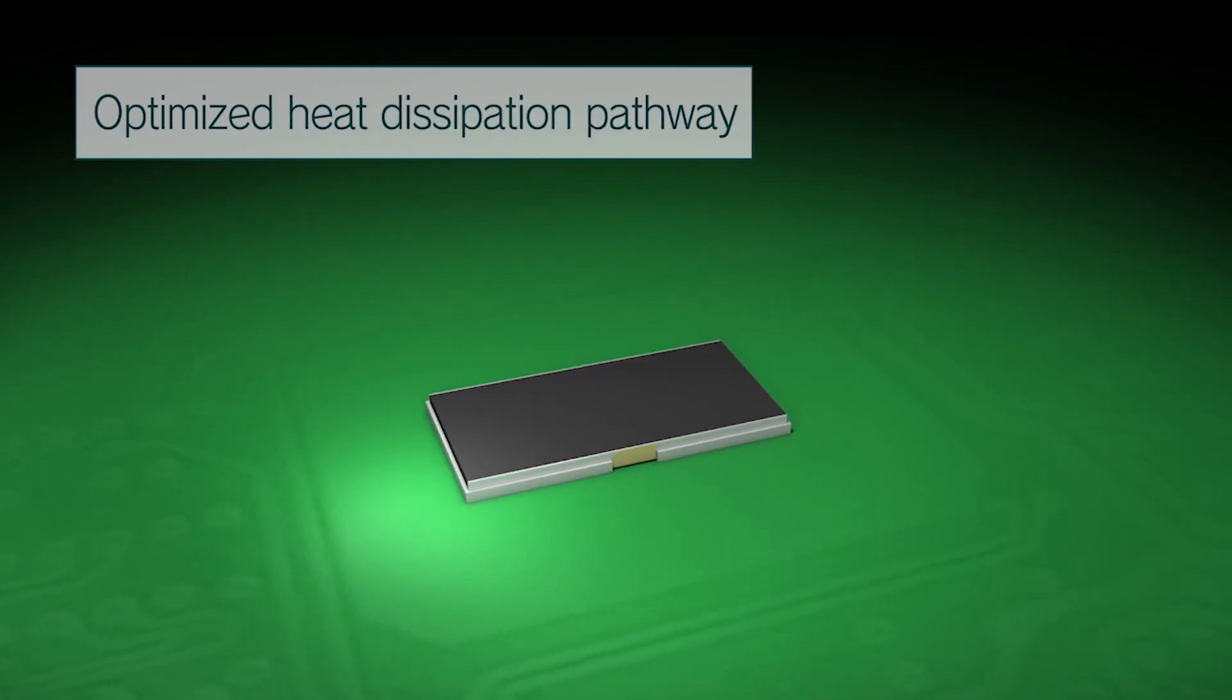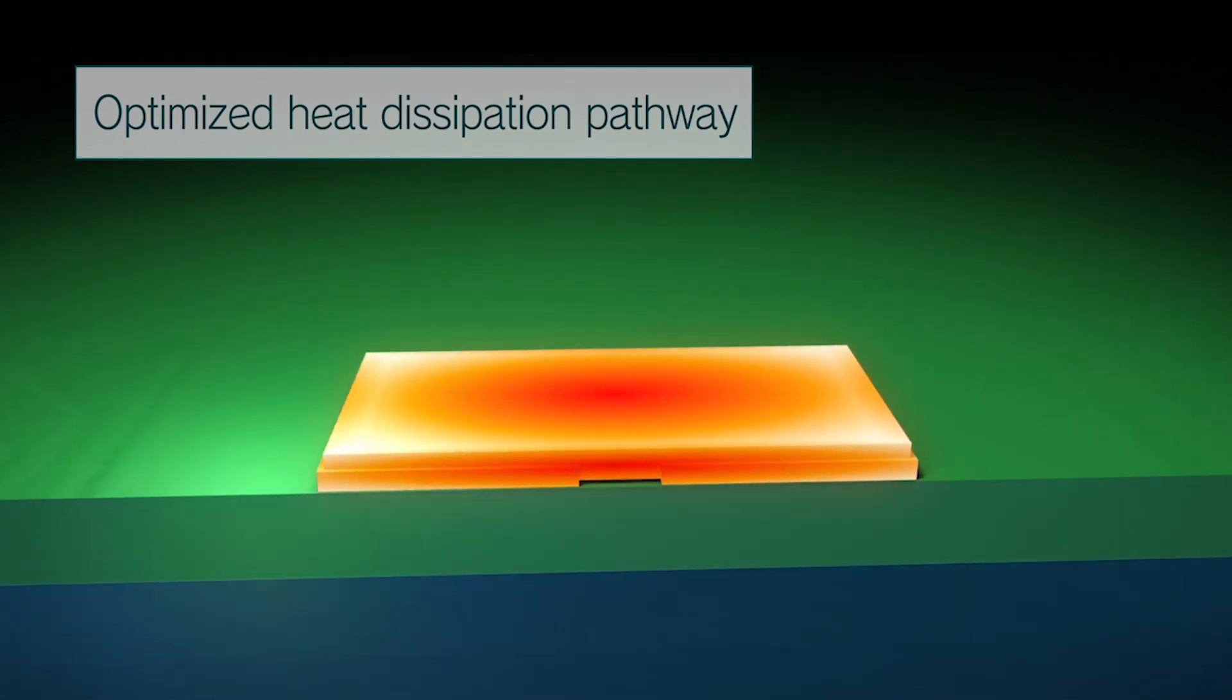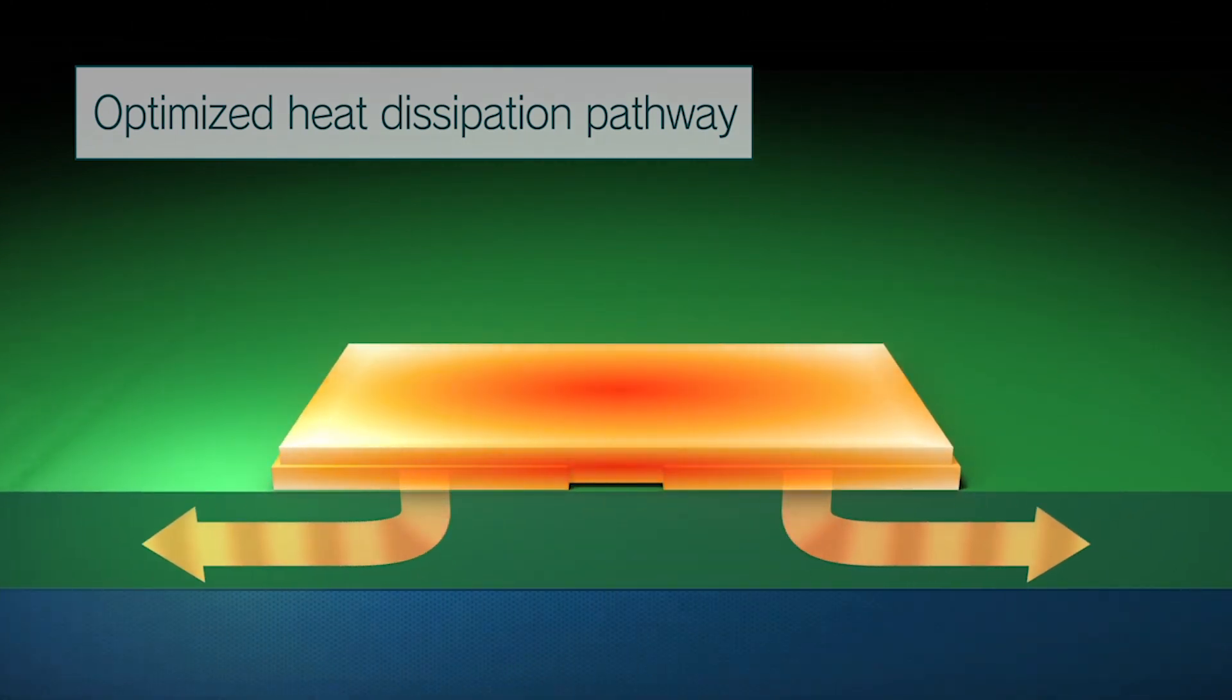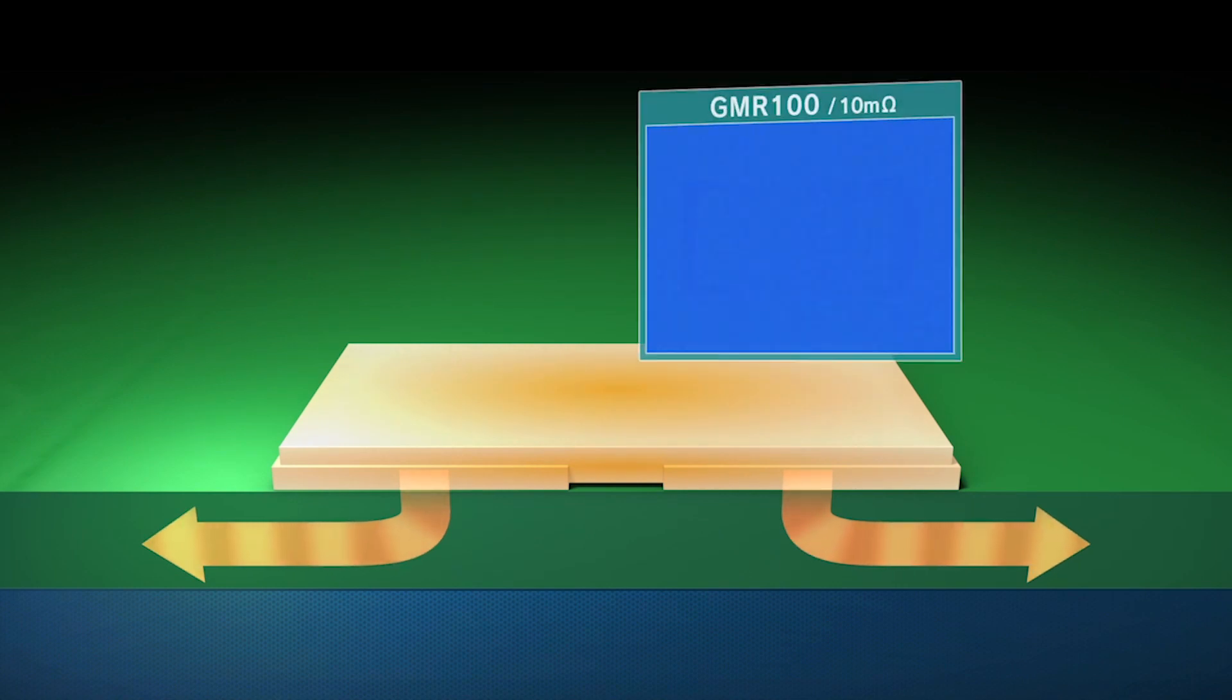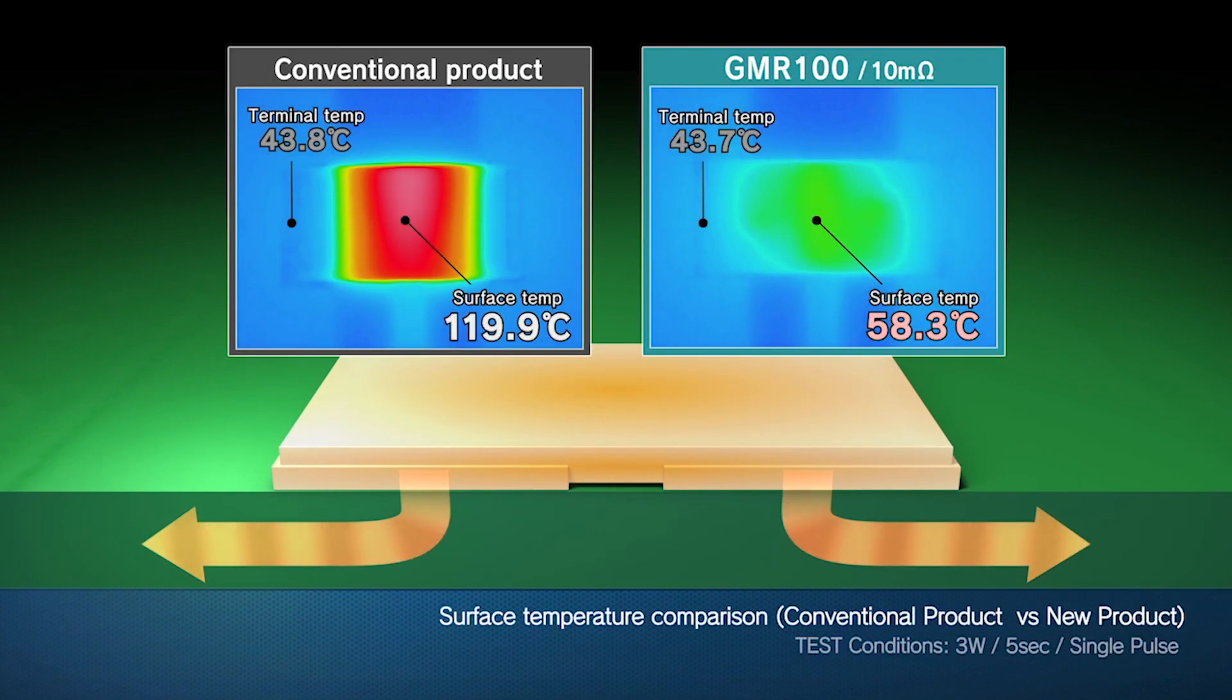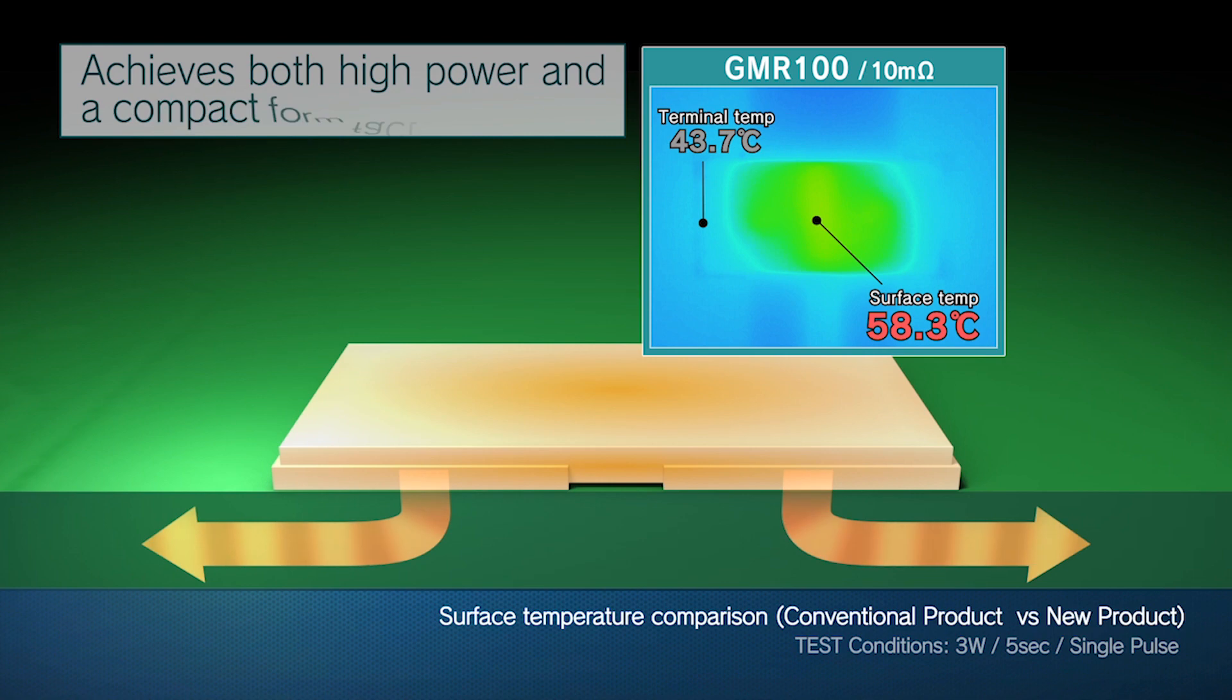The GMR series achieves low surface temperatures during operation by adopting an optimized heat dissipation package structure. This results in excellent heat dissipation performance, simultaneously meeting the needs for high power up to 4 watts and a compact 5 by 2.5 millimeter squared form factor.